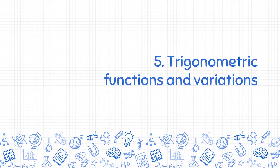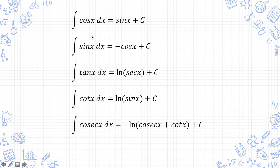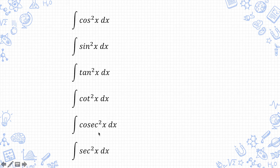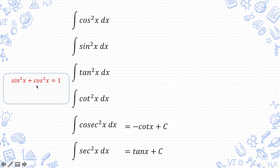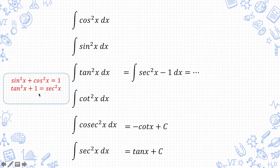Now finally, let's move on to the last section on trigonometry. Cosine x and sine x you should already know, and all the rest are in MF26. For the squares of these functions, the only things you really need to memorize are: integrating cosecant squared x gives negative cotangent x, and integrating secant squared x gives tangent x. Then to integrate tangent squared x and cotangent squared x, you apply the identity sine squared x plus cosine squared x equals 1. Dividing throughout by cosine squared x gives tangent squared x plus 1 equals secant squared x. Dividing throughout by sine squared x instead gives cotangent squared x plus 1 equals cosecant squared x, so cotangent squared x can be written as cosecant squared x minus 1.